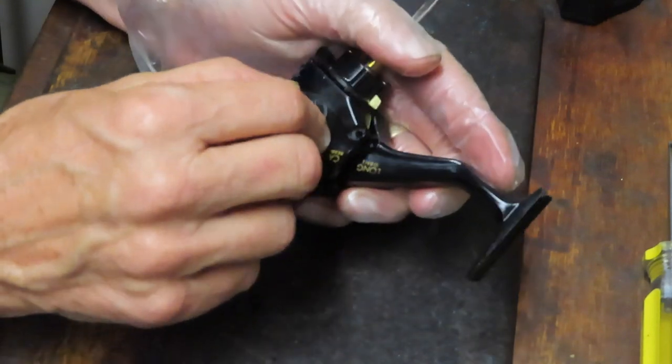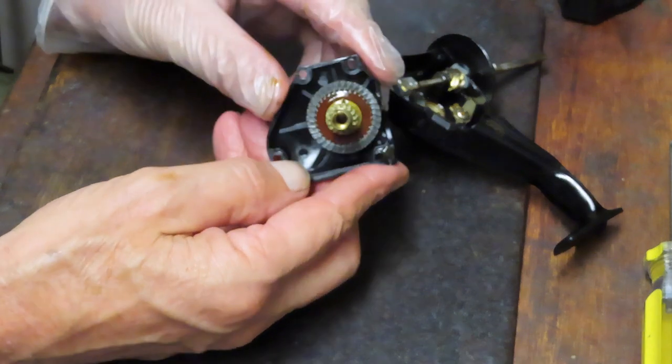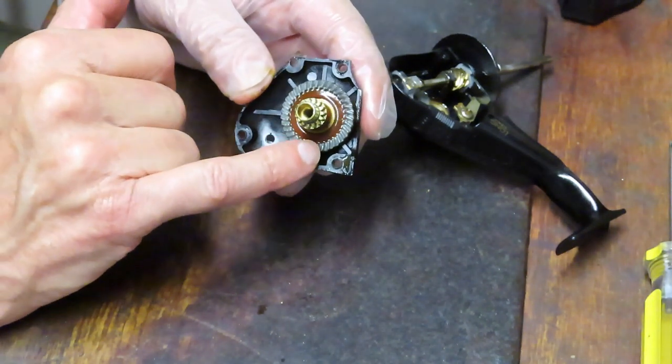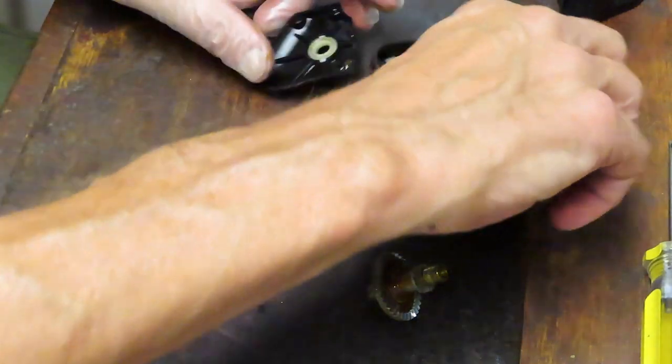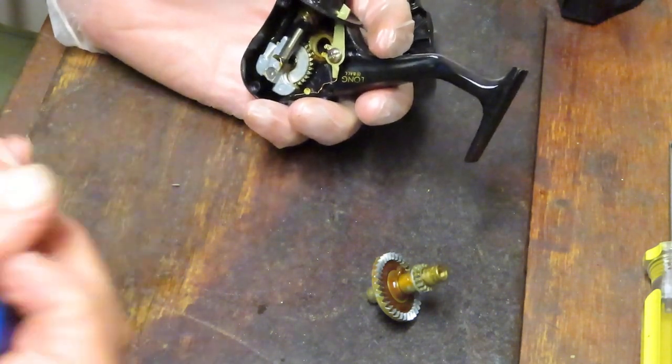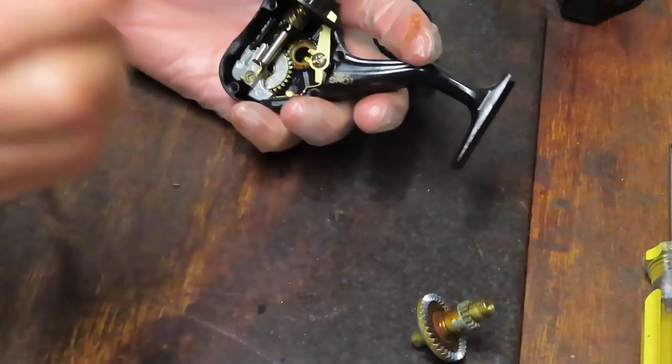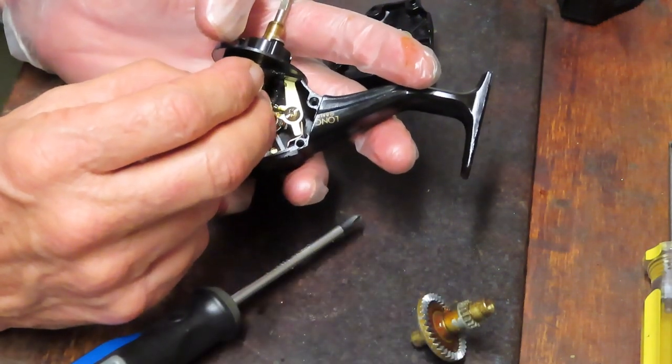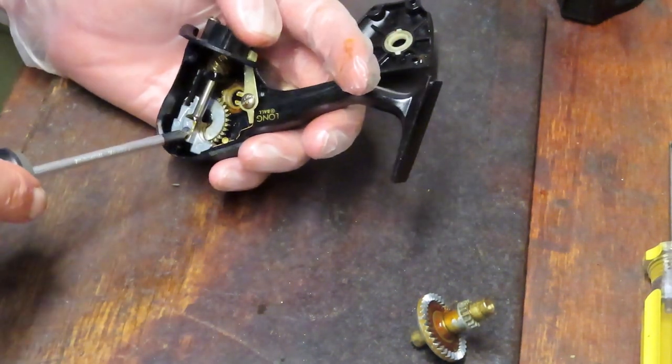Now I should be able to remove the side plate and see what we're looking at here. We've got what we would typically expect of a reel that needs a little bit of TLC - a lot of accumulated old grease. We have a plastic bushing on this side and a plastic bushing on this side. That means it's only a one ball bearing reel. We have that wire setup on the back here for the anti-reverse.